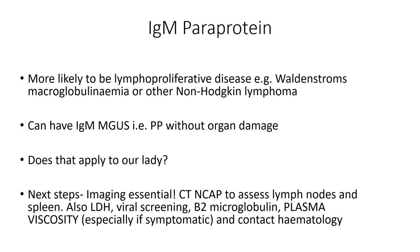Really important with these patients is plasma viscosity, especially if they're symptomatic. If you think back to the first lecture, the IgM is a pentamer — five molecules all put together. When there's a high amount of this in the blood, it really thickens it — think of it like treacle going around your blood system. This thick treacly blood can cause strokes and heart attacks from poor flow. Symptoms before those happen will be blurred vision, headaches, and poor memory. So you need to ask about these, get the viscosity, and make sure there's nothing urgent.